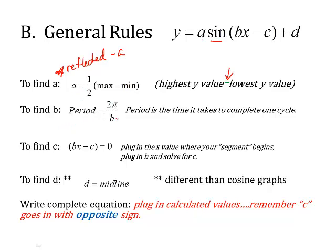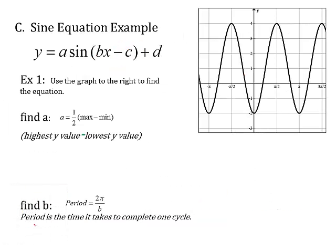To find b, remember, b represents, it helps you find the period. So find the period of one complete cycle. So you took 2 pi over b equals that time. Solve it for b. c, just like yesterday, it's bx minus c. You found the b already. x is the x value where your segment begins. You plug those two in and solve it for c. Now, d. d is a midline. It's a little different than the cosine graphs, because remember, our sine graphs have to come back to midline. So you've got to find this midline, and that's what d is. To complete the equation, you plug in the calculated values, remembering that c always has the opposite sign, because it's a minus in the original equation.